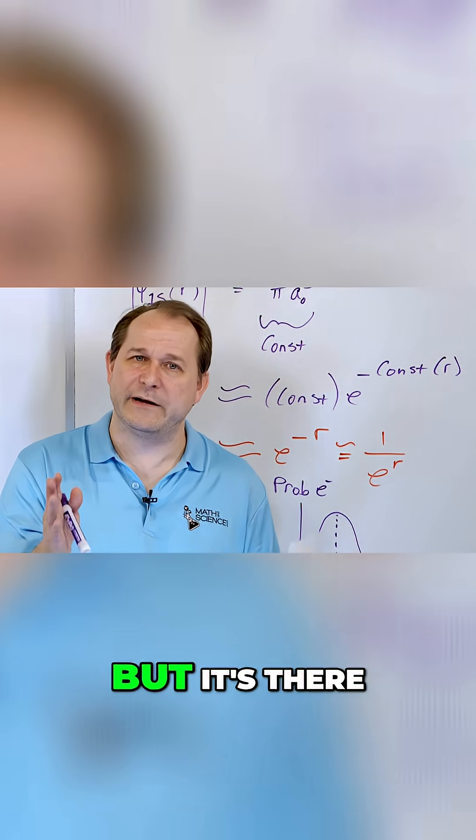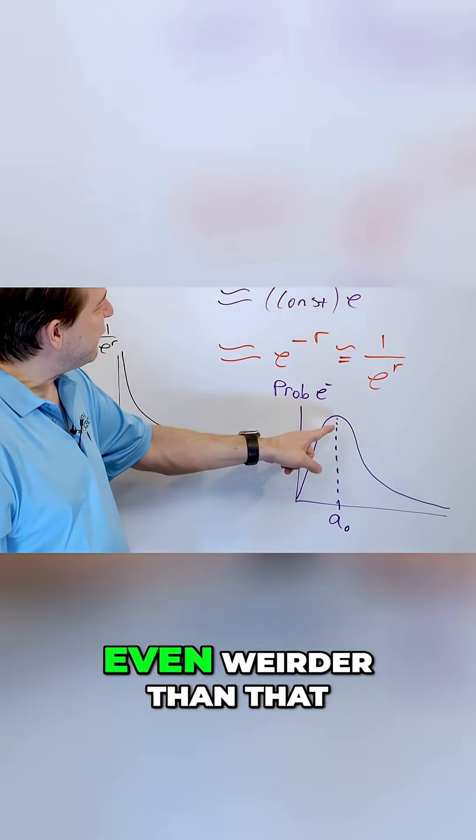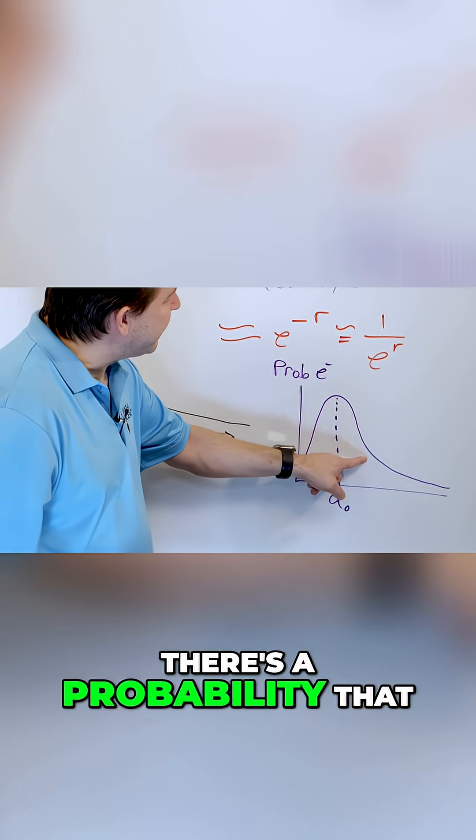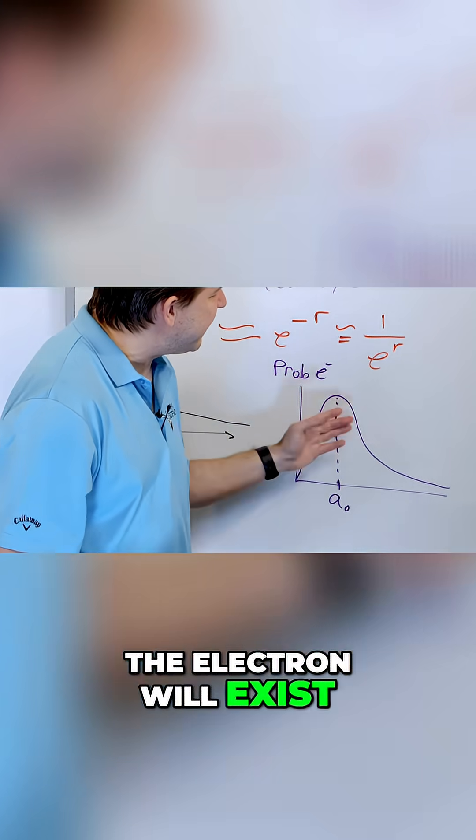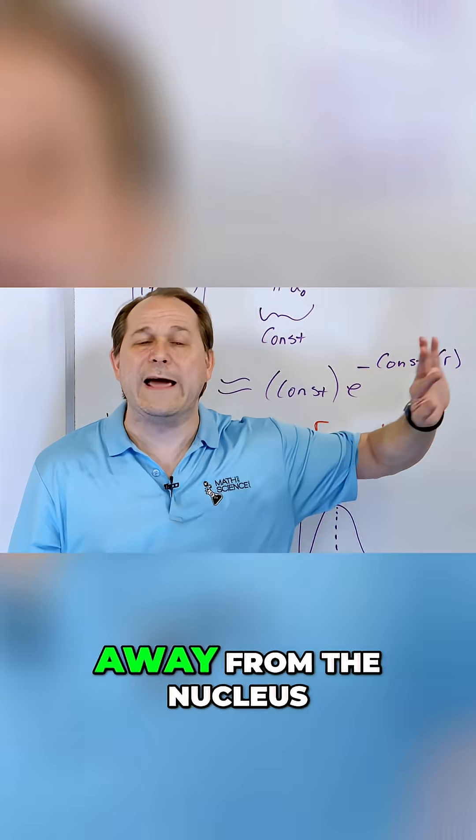Very, very small chance, but it's there. But look at what's even weirder than that. There's a probability that the electron will exist at some arbitrary distance away from the nucleus.